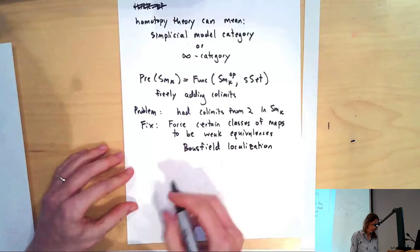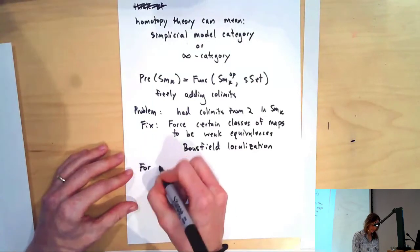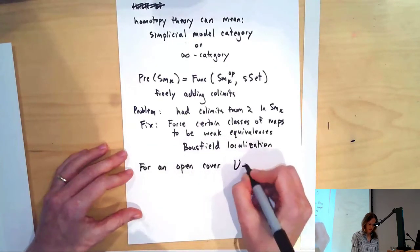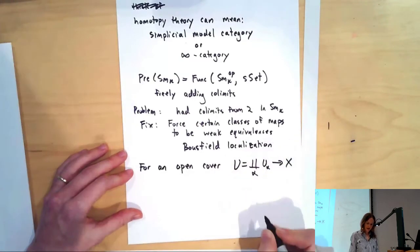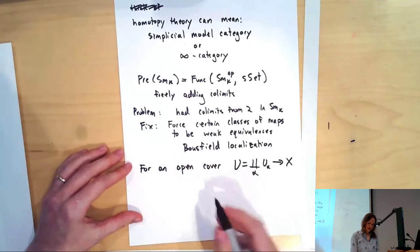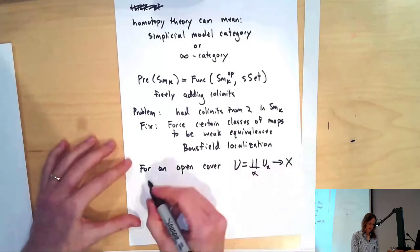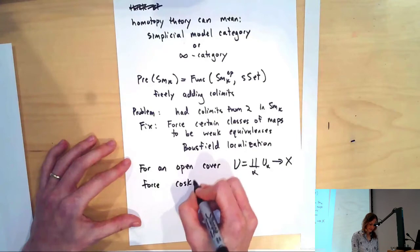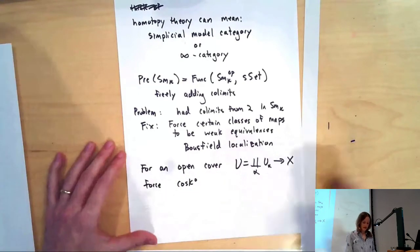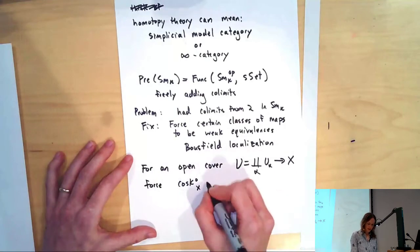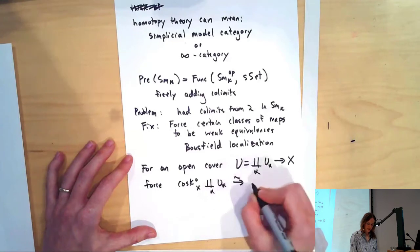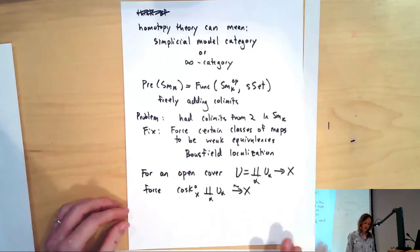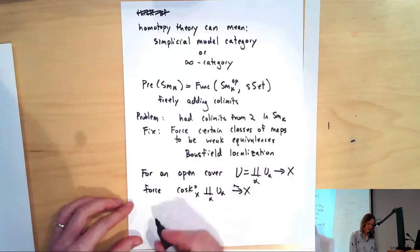So for an open cover U, maybe a disjoint union of U_α to X, we're going to force the Čech nerve, force this map to be an equivalence or make a simplicial object in a way that ensures that the associated gluing remains a gluing in our spaces. So we can force those to be weak equivalences.